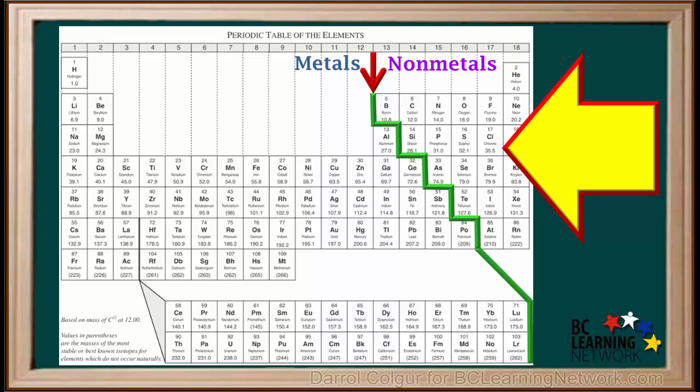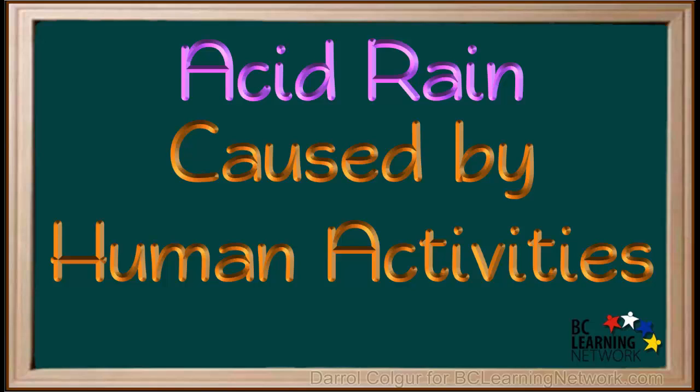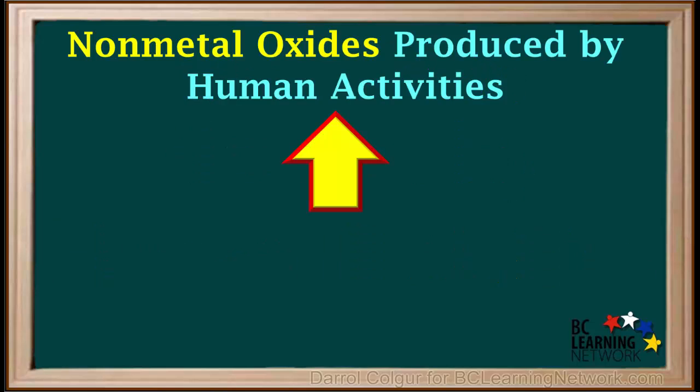You may recall that nonmetal oxides are oxides of elements on the right side of the staircase on the periodic table. Remember, nonmetal oxides react with water to form acidic solutions. Nonmetal oxides produced by human activities are the major sources of acid rain.